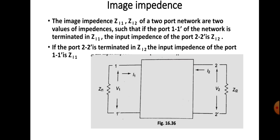Let us see a two-port network shown in the figure. Let 1, 1' be the input port and 2, 2' be the output port. The port voltages are V1 and V2. If we are terminating the input port with ZI1 and similarly the output port with ZI2, these are the impedances at the input and output ports. ZI1 means image impedance at port 1 and ZI2 is image impedance at port 2.